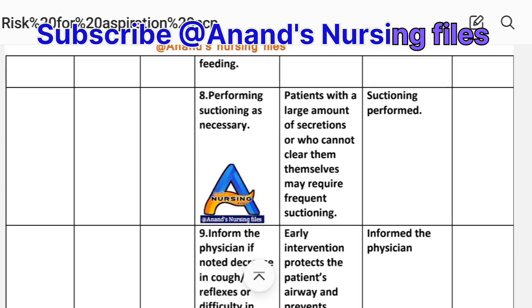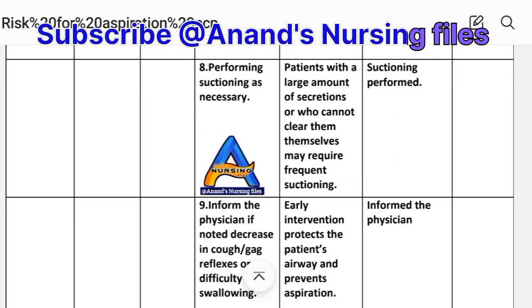Intervention eight: Perform suctioning as necessary. Rationale: Patients with a large amount of secretions, or who cannot clear them themselves, may require frequent suctioning. Implementation: Suctioning performed.